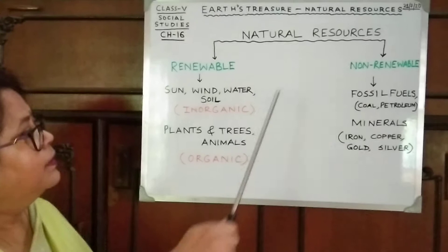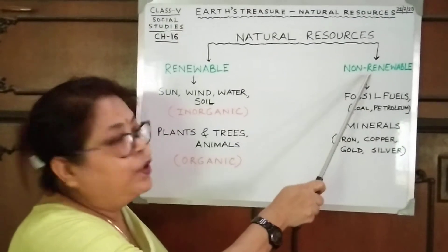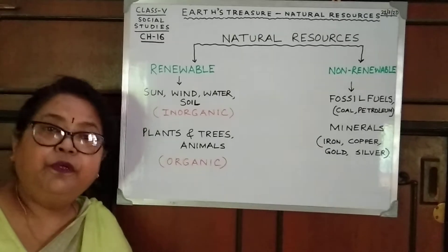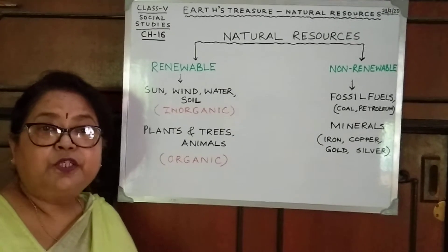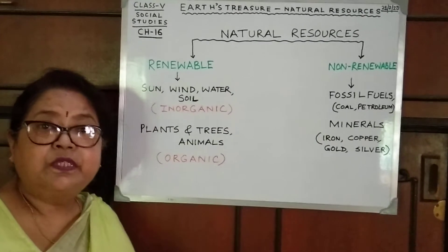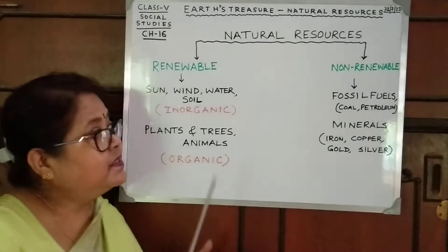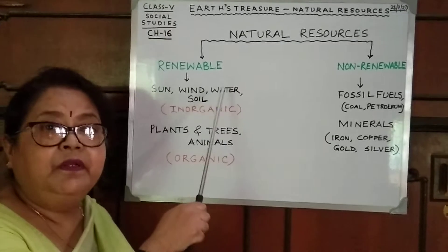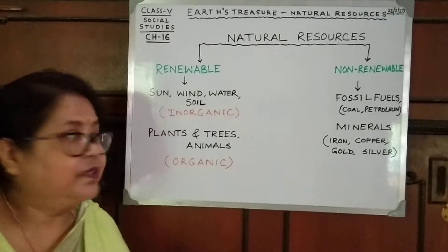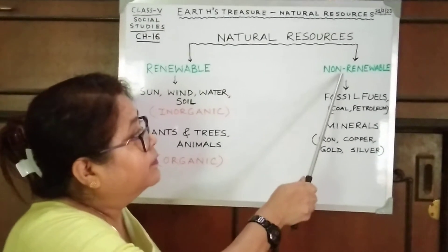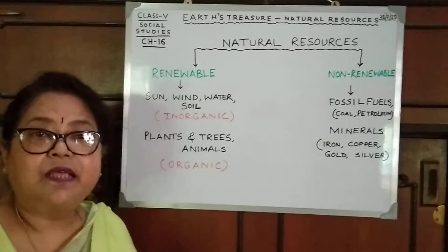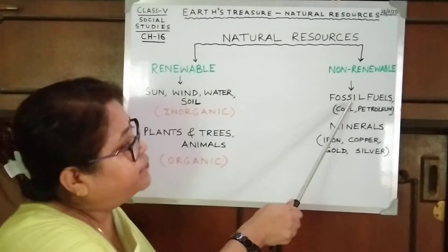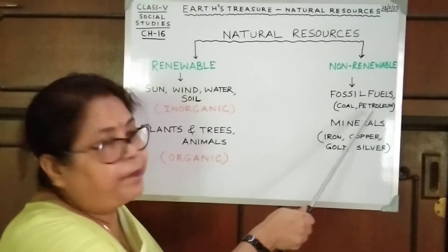Next, non-renewable resources. What are non-renewable resources? These are resources which we cannot use again and again. These resources are exhaustive. As renewable resources are non-exhaustive, these non-renewable resources are exhaustive. Examples include fossil fuels, coal, and petroleum.